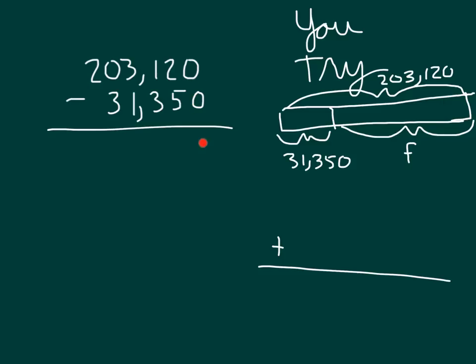In the ones place, 0 minus 0 is 0, and in the tens place is where we get our first regroup. Where do we regroup from? Right, the hundreds, where one of those hundreds became 10 tens. 12 minus 5 is 7. 0 minus 3, can't do that, so I have to regroup from the thousands. The 3 becomes a 2, and that 0 can become 10. 10 minus 3 is 7. 2 minus 1, in the thousands place is 1.